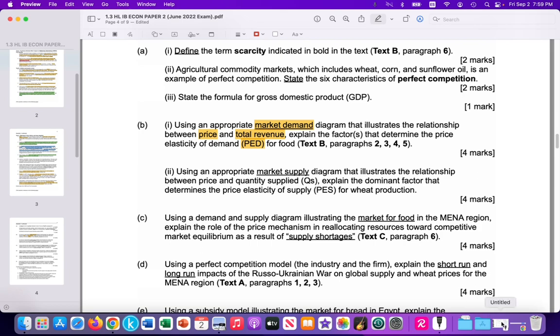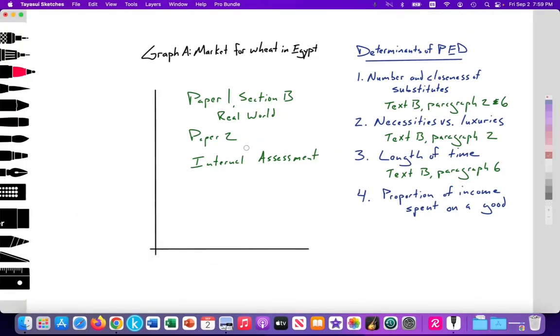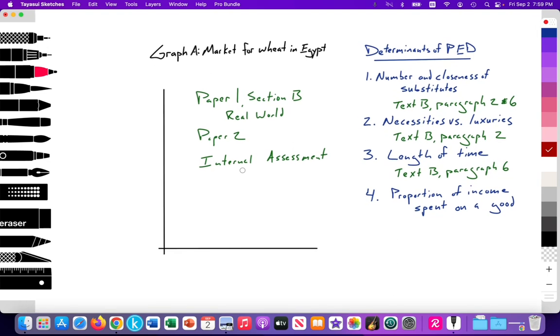And it highlights we can use information from text B, paragraphs 2, 3, 4, and 5. So I'm going to make some notes here. This video is going to try to tackle that question. And I'm trying to understand what is the PED for food. I'm going to use the article to highlight a specific example. So I'm going to use wheat since the article discusses wheat in Egypt. So my graph, graph A, will be the market for wheat in Egypt. Wheat as an example of food. And we're going to try to think about what is determining the price elasticity of demand.